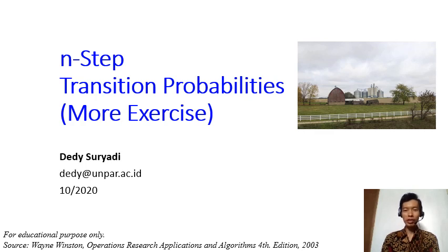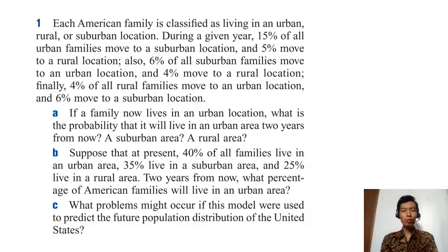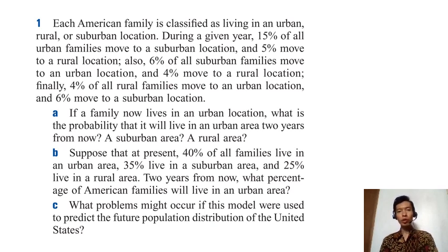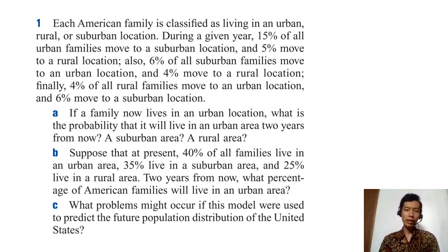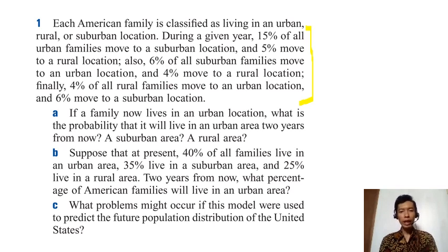In this video, let's do an exercise on n-step transition probabilities. In this problem, each American family is classified as living in an urban, rural, or suburban location, and these sentences show how the families move from one location to another within a year.